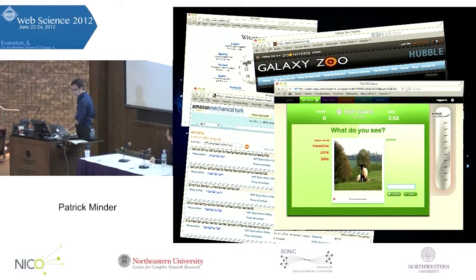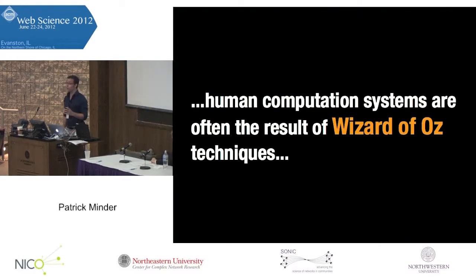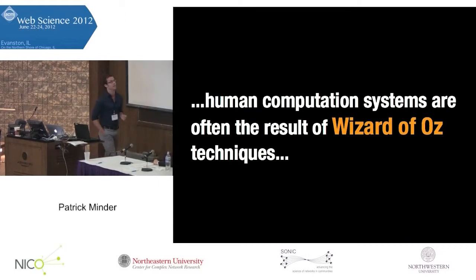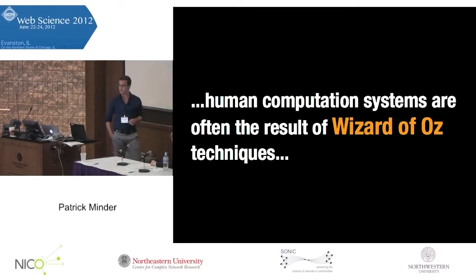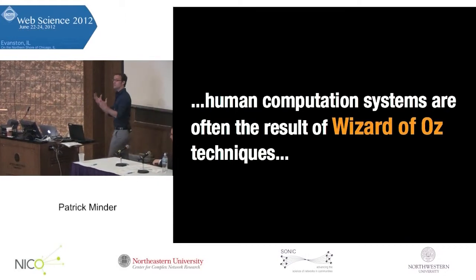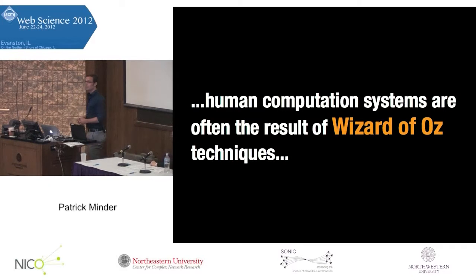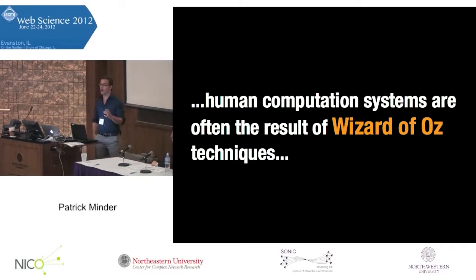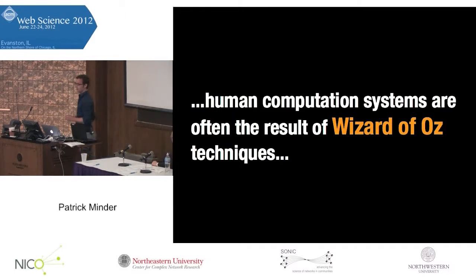But when we try to program new systems for this global brain, we have some problems. We need a Wizard of Oz — somebody who knows how to design these systems, somebody who knows how the crowd and the machines can interact.